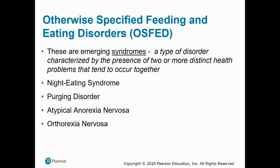Another subgroup of disordered eating behaviors is categorized as otherwise specified feeding and eating disorders. These are all actually syndromes, meaning two or more distinct health issues are occurring simultaneously. We'll talk about night eating syndrome, purging disorder, atypical anorexia nervosa, and orthorexia.